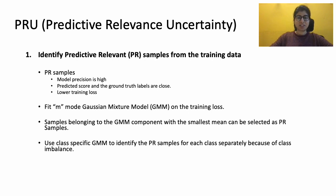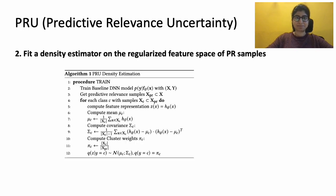Samples belonging to the GMM component with the smallest mean are the PR samples. We use a class-specific GMM to identify PR samples because of class imbalance. Then we fit a density estimator on the regularized feature space of PR samples. Finally, during inference, we use the likelihood from the fitted density estimator to quantify the uncertainty.